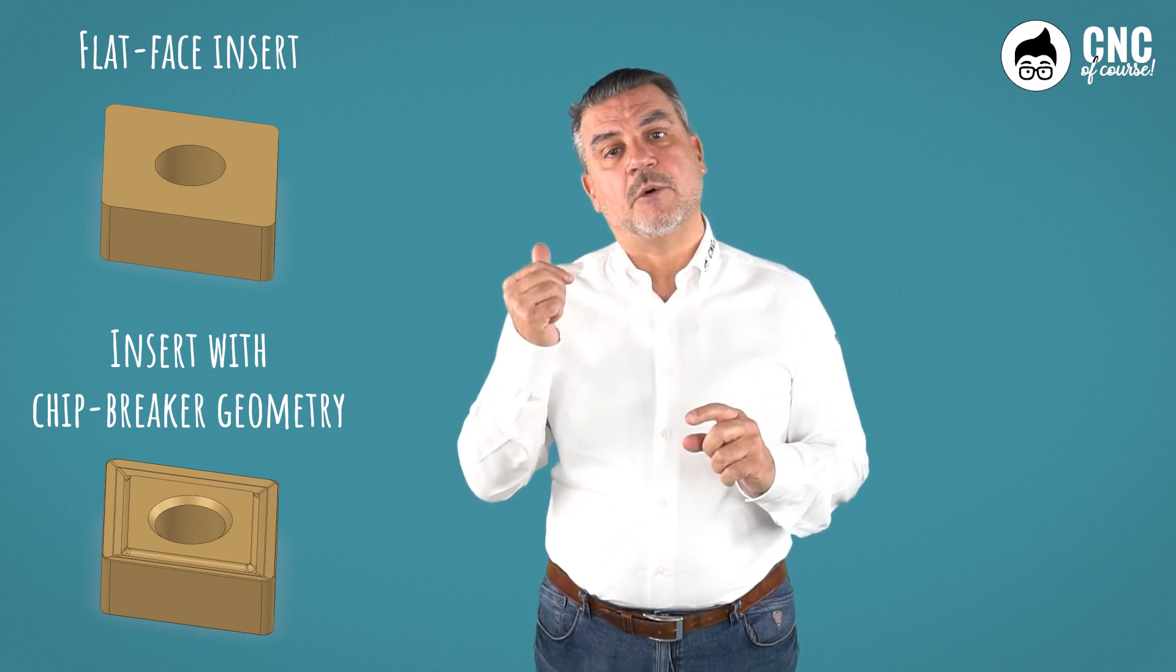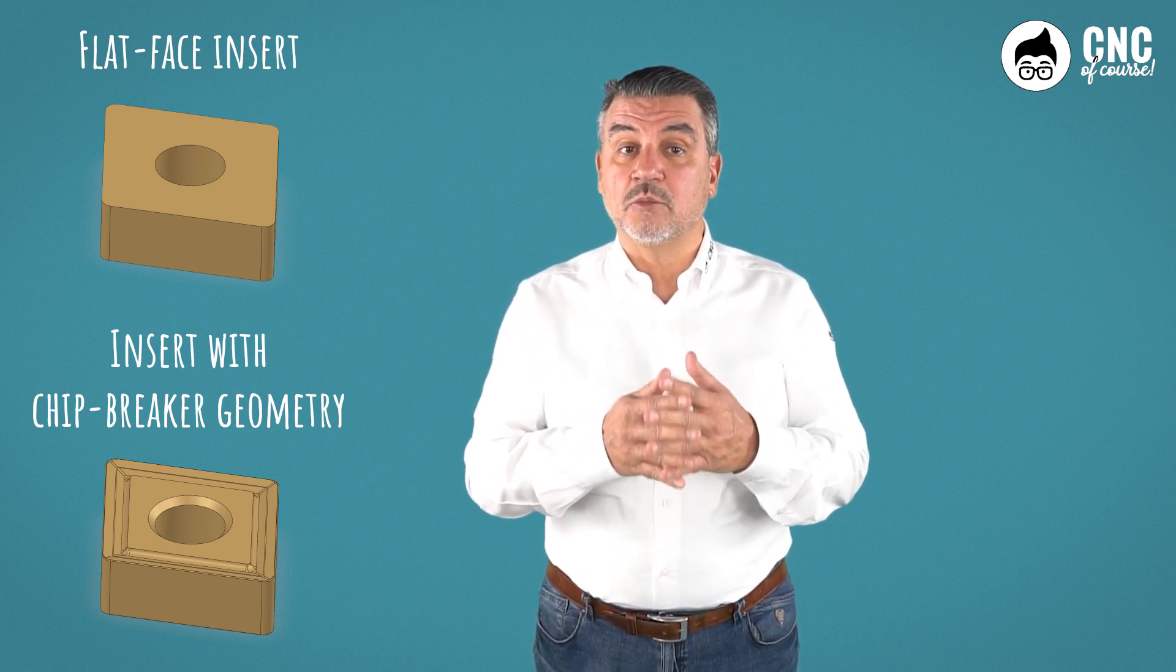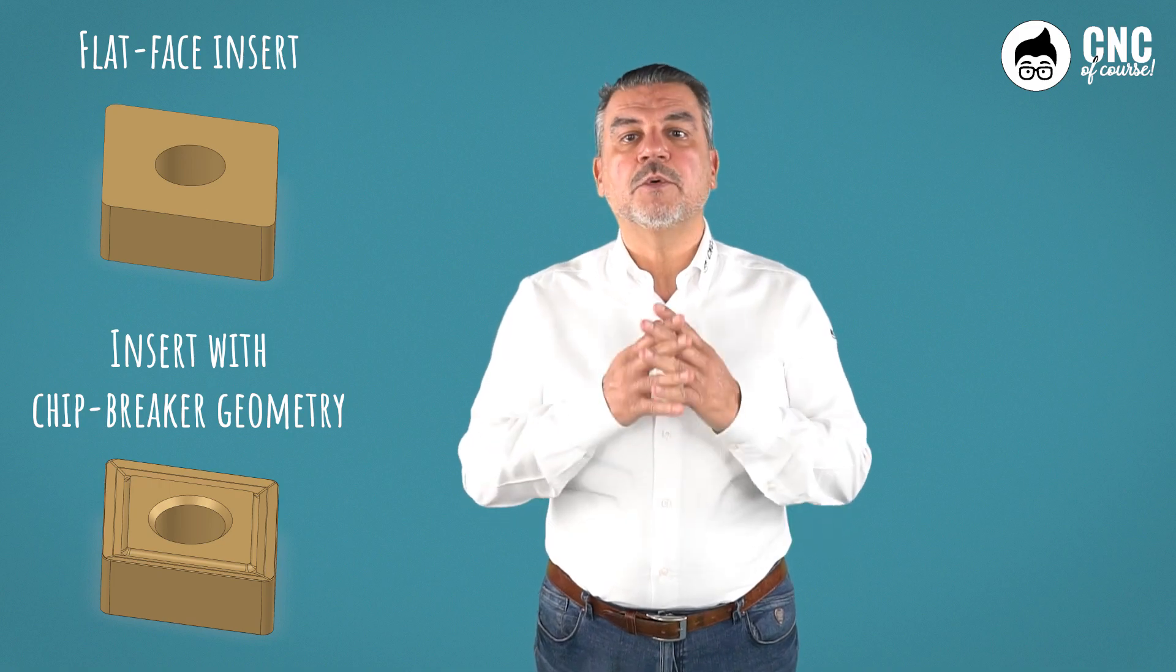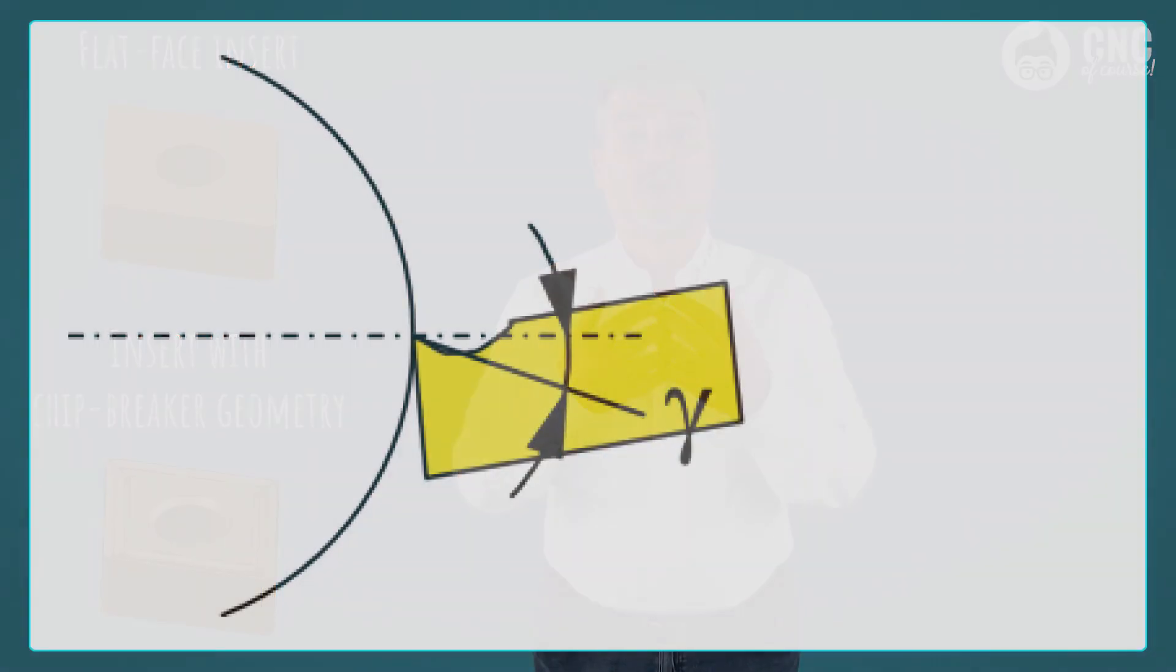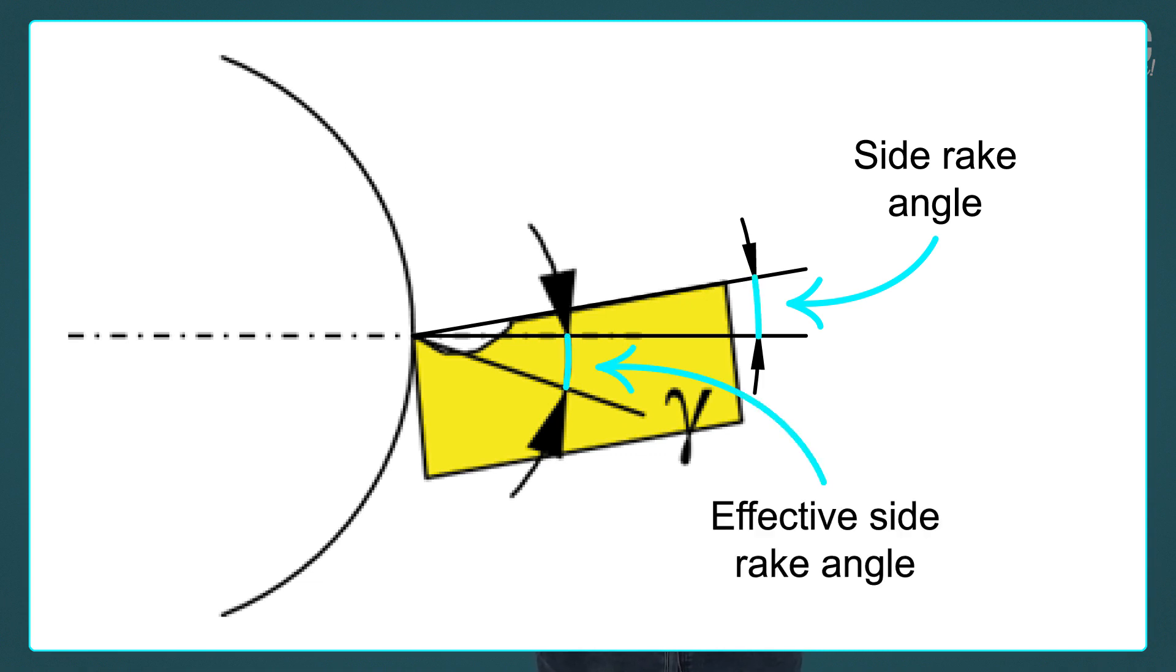Let us now take an insert with chip breaker geometry, and try to see whether the chip breaker geometry has any influence on the side rake angle. To do this, we analyze the insert alone. Positioned as if it were mounted on a negative tool, we cut it along its side, where chip formation takes place. From the photo, it is clear how the chip breaker geometry affects the rake angle, which at this point we will call the effective rake angle, because it is the angle that really affects the chip sliding angle, the angle we talked about at the start of the lesson.